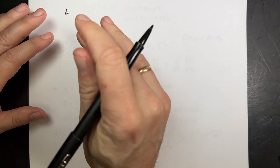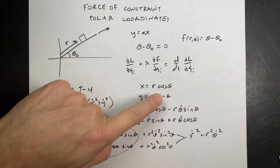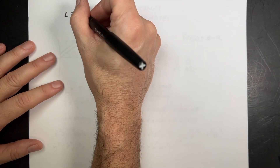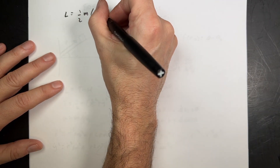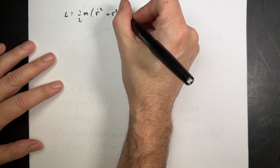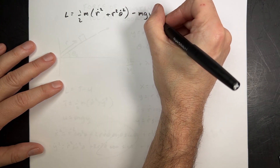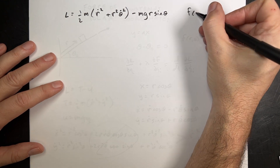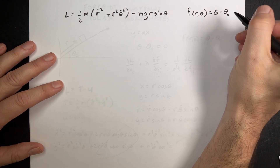So the Lagrangian in polar coordinates is L equals one-half m times (r-dot squared plus r squared theta-dot squared) minus mgr sine theta. And the constraint function is f of r and theta equals theta minus theta-naught.